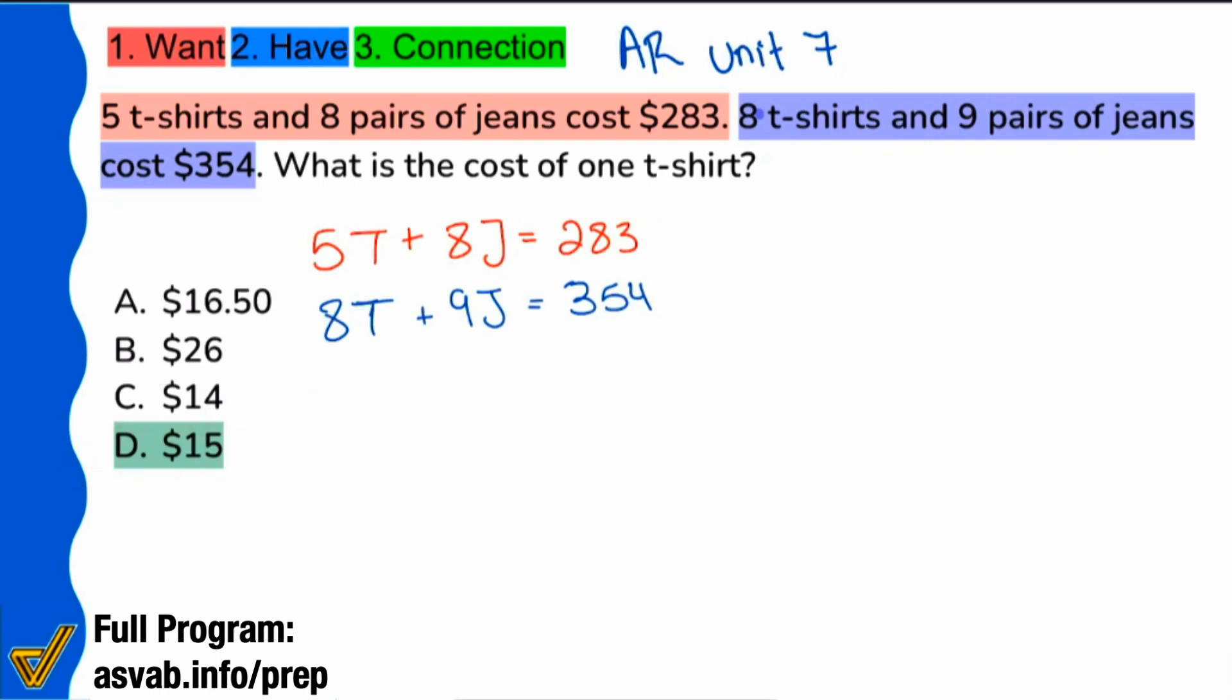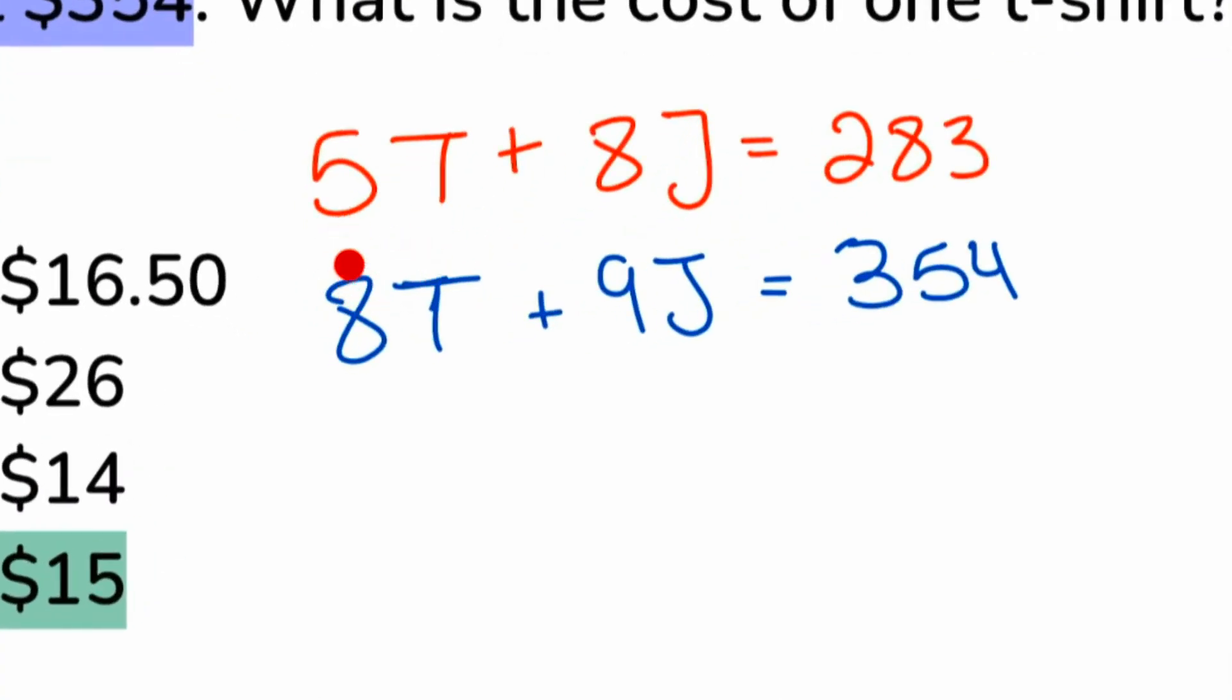That way you can see exactly how we can solve a complicated system of equations where you can't eliminate first step and you can't substitute first step because if you notice the 5 and the 8 for the T, they're different and we can't immediately add or subtract. Same thing over here.